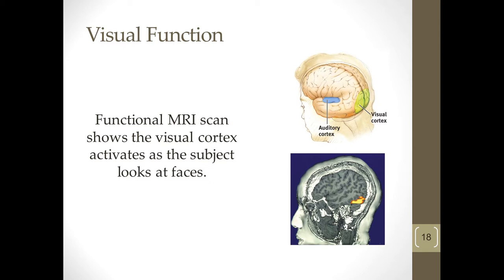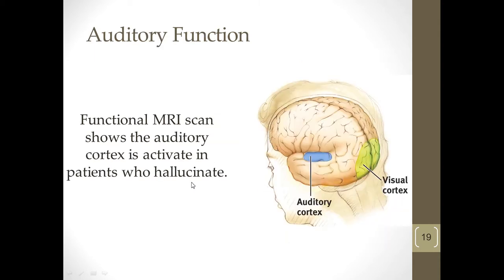One of the most important things to know about the brain is that nothing happens in a vacuum. One part of your brain is almost always communicating with another part. We'll see two core areas light up in both visual and auditory functions. If you were looking at a face, primarily your visual cortex would light up, but there's also that part of your brain that recognizes the face and says it in your mind. The same is true with people who hallucinate — when people are having hallucinations, both the auditory and the visual cortex will light up.